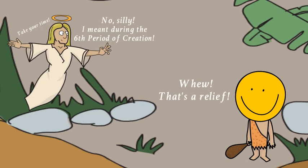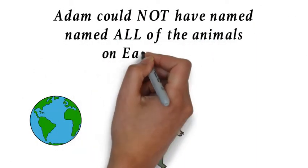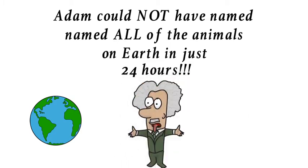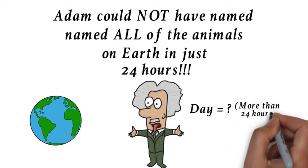Of course, there are other problems with this too. Like, how could Adam have lived that long? Or wouldn't the animals have died out with all of that extra time? But anyway, that's getting a little off topic there. The fact is that old earthers believe that it was impossible for Adam to name every single animal in just a 24 hour period. Therefore, the word day must have been describing a much longer time frame.